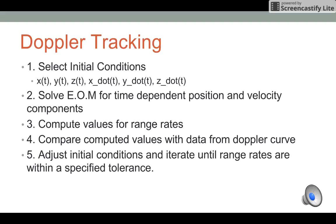You're going to adjust your initial conditions and continue to iterate until the range rates are within the specified tolerance of each other. When they are, then those initial conditions are your conditions for position and velocity at the time of observation.